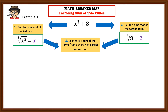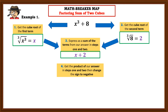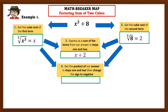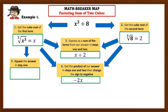Step 3 is to express as a sum of the terms from steps 1 and 2: that is x + 2. Step 4 is to get the product of the answers in steps 1 and 2, then change the sign to negative. We multiply x times 2, which is positive, but we change the sign to make it negative 2x. Step 5 is to square the answer in step 1: x squared equals x².